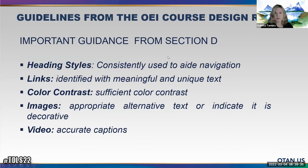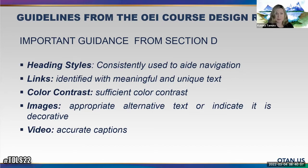Section D of the OEI design rubric addresses a lot of accessibility issues. We should have headings that are consistently used to aid in navigation, and links need to be identified with meaningful and unique text. So we shouldn't just copy and paste a URL into our page — we need to identify links with meaningful and unique text. We also need to pay attention to color contrast, using sufficient color contrast. And for images, we really need to have appropriate alternative text or indicate that it's decorative.